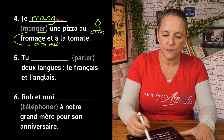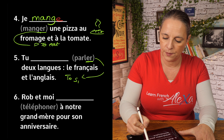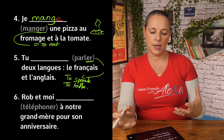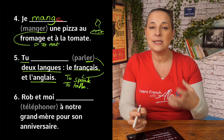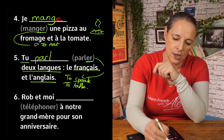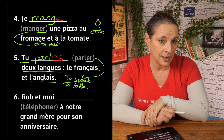Number five: tu, with the verb parler — meaning to speak or to talk. We want to say 'you speak two languages' — French and English. We drop the ER and add the ending for tu, which is ES: tu parles. Tu parles deux langues — le français et l'anglais.